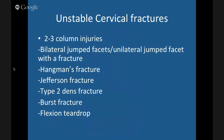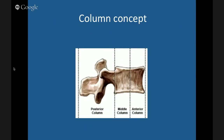Regarding fractures — the concept of columns: there are three columns. Unstable fractures occur when two to three columns are affected. The anterior half of the body and the anterior longitudinal ligament is the anterior column; the posterior half of the body and the posterior longitudinal ligament is the middle column; anything behind that is the posterior column. Typical unstable cervical spine fractures are: Hangman's fracture, Jefferson fracture, Type II dens, flexion teardrop, bilateral jumped facets, or a unilateral jumped facet with an associated fracture.